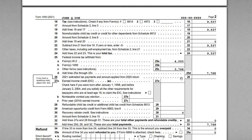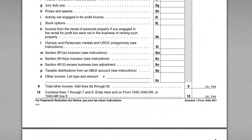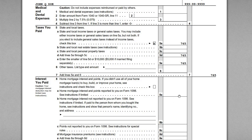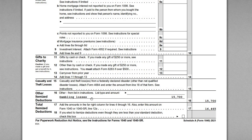Now how do we report the losses to offset those gains? John had $18,600 in losses. As an individual US taxpayer, you report gambling losses as an itemized deduction on Schedule A, but the deduction cannot exceed the winnings. Going to Schedule A — itemized deductions — gambling losses are reported on line 16, Other Itemized Deductions. These are not subject to an AGI floor, so any amount put there is deductible so long as you can itemize.